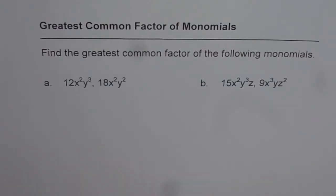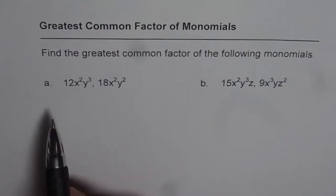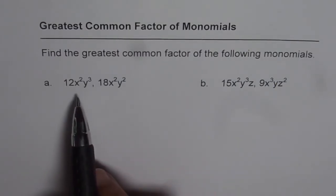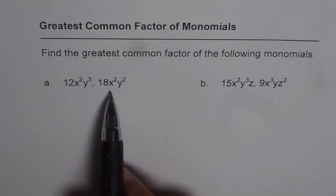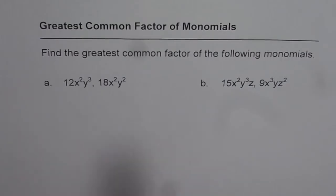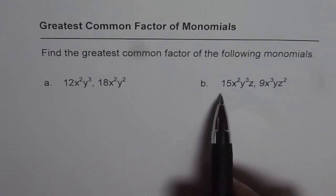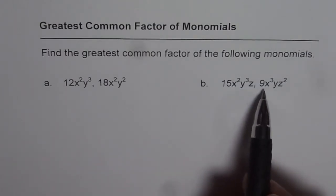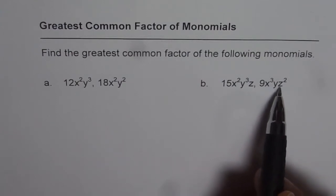We have two examples here to explore. The first one is 12x²y³ is one of the monomials, the second one is 18x²y². We have a very similar question here which is 15x²y³z and 9x³yz².